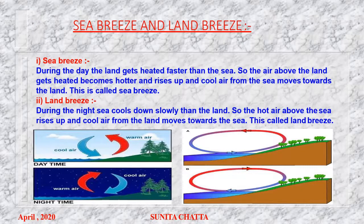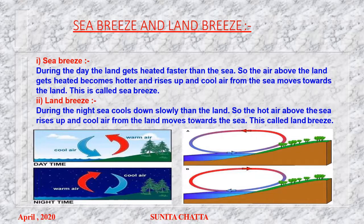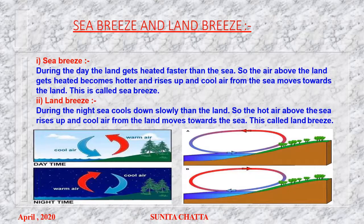Now sea breeze and land breeze. Sea breeze: during the day the land gets heated faster than the sea, so the air above the land gets heated, becomes hotter, and rises up, and the cold air from the sea moves towards the land — this is called sea breeze. Land breeze: during the night the sea cools down more slowly than the land, so the hot air above the sea rises up and cool air from the land moves towards the sea — this is called land breeze.